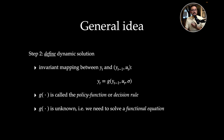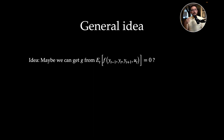Now g is unknown. There are basically only three or four models where one can write down this function in closed form. For all other cases, we have to approximate it — mathematically, we need to solve a functional equation, which is very hard. The idea is: maybe we can get g from something that is known — the model equations. Let's use the policy function on the model equations.